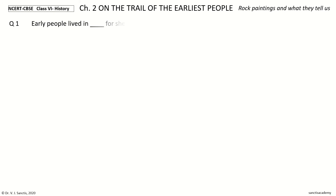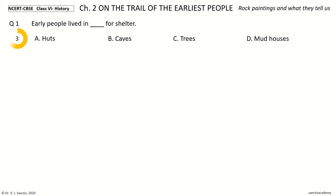Question 1. Early people lived in ___ for shelter. The options are: huts, caves, trees, mud houses. Your time to choose. And the answer is caves.